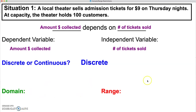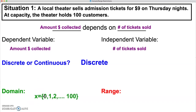As we look at finding our domain and range, our domain has to include all the possible values from our independent variable. We're talking about the number of tickets. So the number of tickets — we could sell zero tickets, one ticket, two tickets, all the way up to our capacity of 100 tickets. Notice how this is written as a discrete set of numbers.